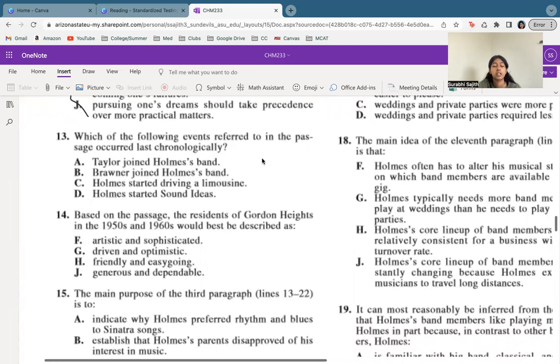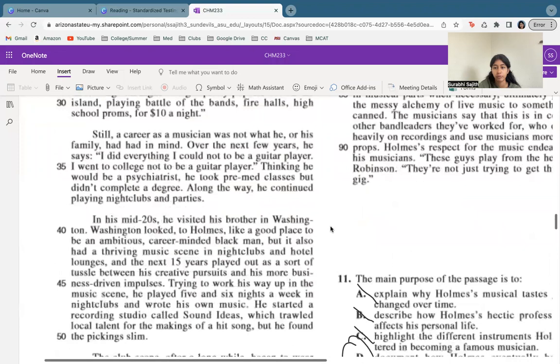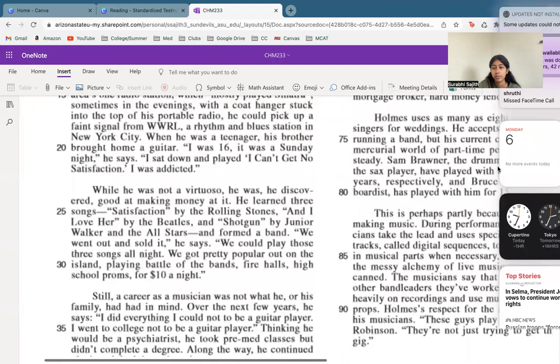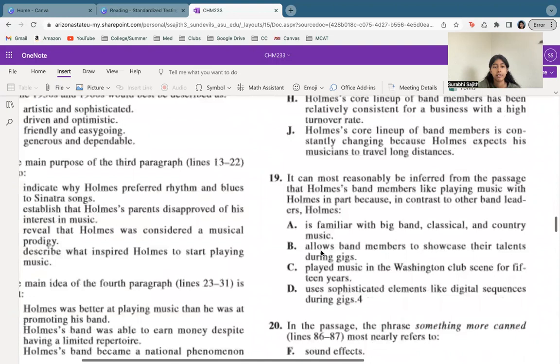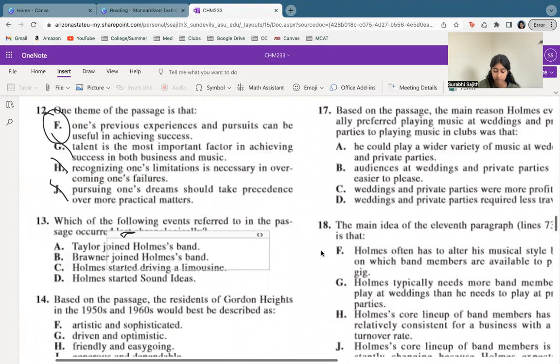Which of the following events occurred last chronologically? We want to make sure we know that this is last. Now let's label these, one, two, three, four, five. If we look at the story, we see that sound ideas was first, and then he started doing the limousine. So we already have one and two here. And then let's think about who came first. Brawner was three years ago and Taylor was four years. So Brawner is definitely the most recent. So that means B is our correct answer.